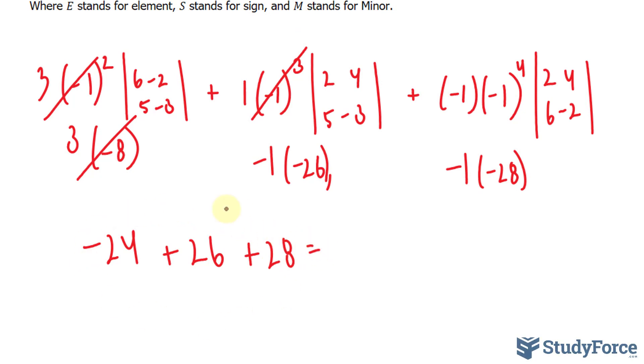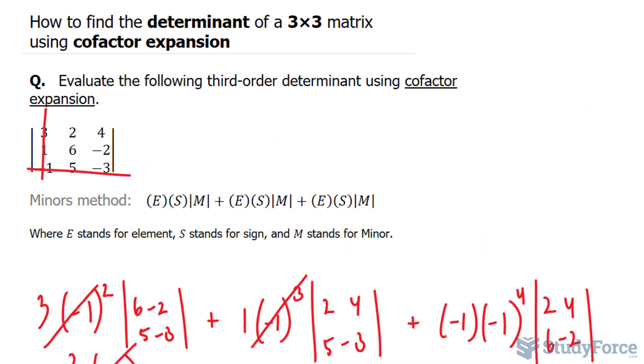Adding and subtracting these numbers gives us a determinant of 30. And there you have it. That is how to find the determinant of a 3 by 3 matrix using cofactor expansion. For another example, make sure you watch question 2 of this series.